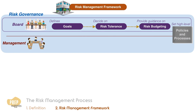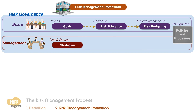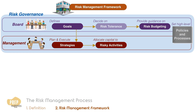The role of management is to plan and execute value-maximising strategies to achieve the goals set out by the board. Management is required to allocate capital to risky activities to execute its strategies, and the overall risk taken should be consistent with the defined risk tolerance. The planned risk exposures that result from management's choice of activities should also be aligned with the risk budget.